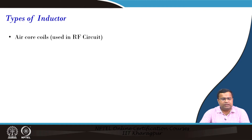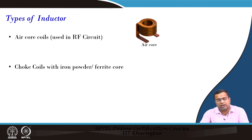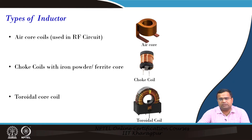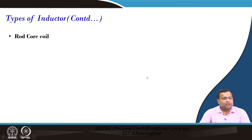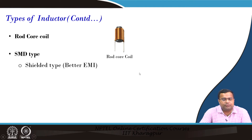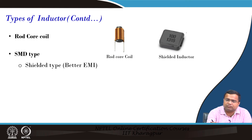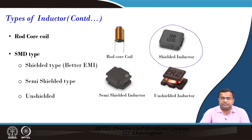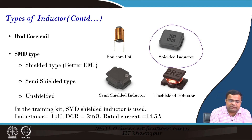The type of inductor can be air core coil, which is used in RF circuits. Then it can be a choke coil with iron powder or ferrite core — either a research choke coil or a toroidal core coil. We often use the first two cores for our power inductor. Then there is rod core coil, SMD type, and shielded type. If you go for SMD type surface mount, it can be shielded for better EMI. This is what we are using in our cores — shielded type. In this training kit, we are using shielded core.